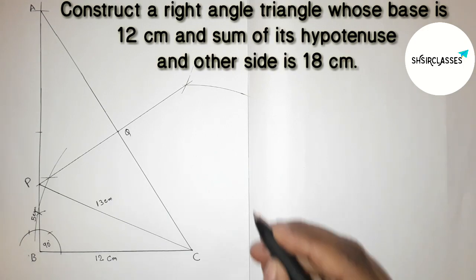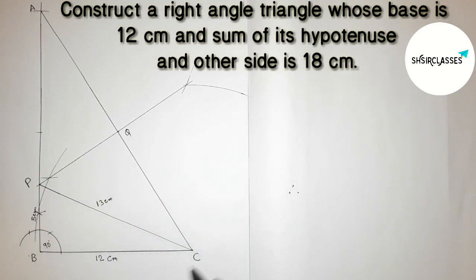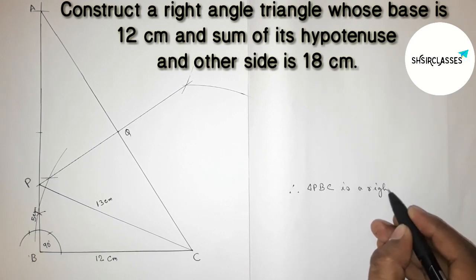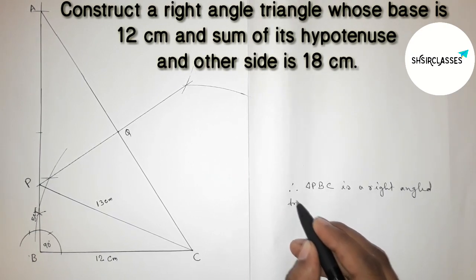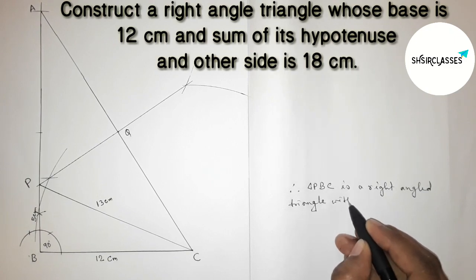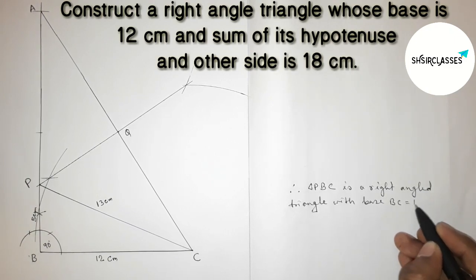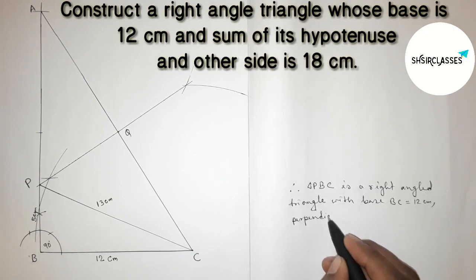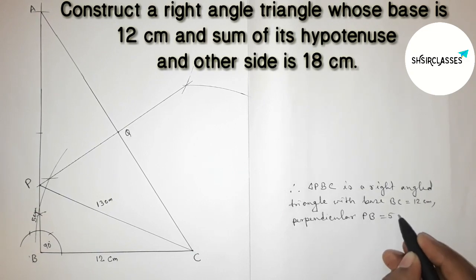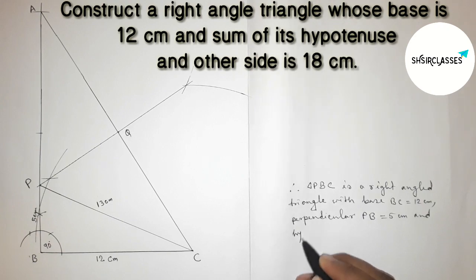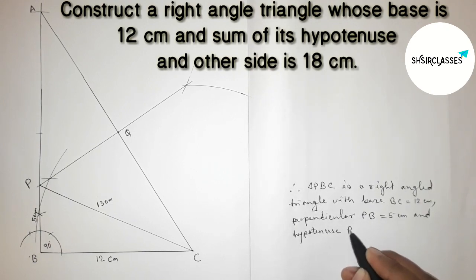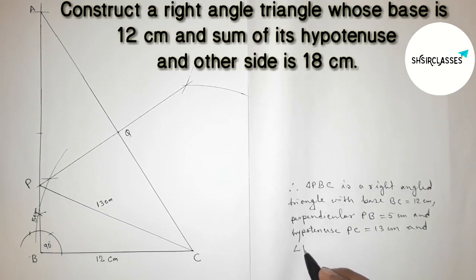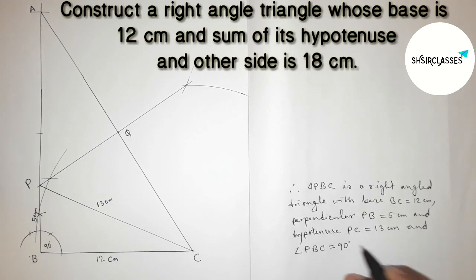Triangle PBC is the required right angle triangle whose base BC equals 12 centimeter, perpendicular PB equals 5 centimeter, hypotenuse PC equals 13 centimeter, and angle PBC equals 90 degrees.